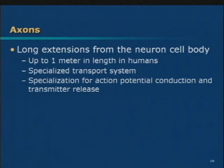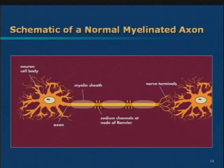The axons that are being damaged are long extensions from cell bodies that sit in the cortex of the brain. They extend down through the brain and out into the spinal cord, where they make connections and then out to your muscles and all the other things that need to be innervated. They're up to a meter long, so these are long structures. They have specialized transport systems to move nutrients and materials up and down, and they conduct electrical impulses very well under normal conditions.